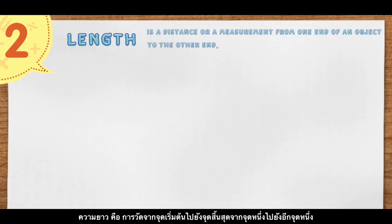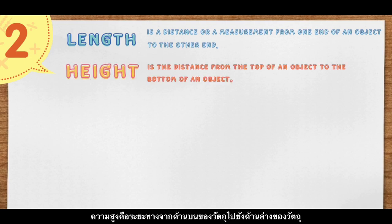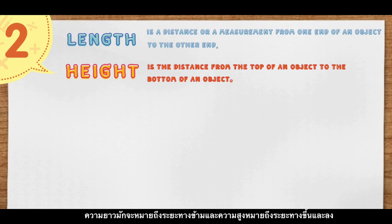Length is a distance or measurement from one end of an object to the other end. Height is the distance from the top of an object to the bottom of an object. Length usually means distance across, and height means distance up and down.